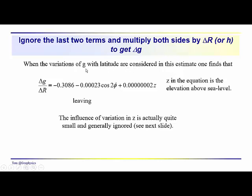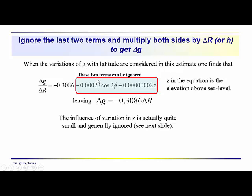If we consider these variations of the acceleration due to gravity with latitude, we find that dG/dR has three terms in it, and we're usually just using this term. Remember the dR, delta R would come over here and we'd have minus 0.3086 times delta R. These terms, it turns out, are very small and they're usually ignored. I will give you an idea of how small they are here in a minute.